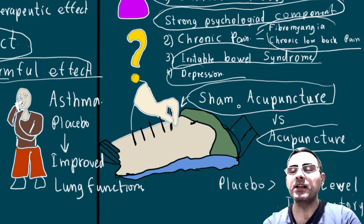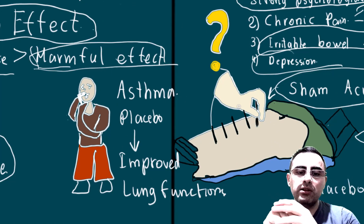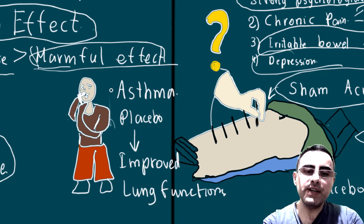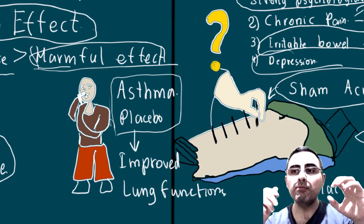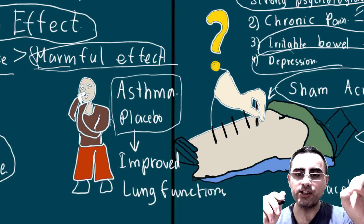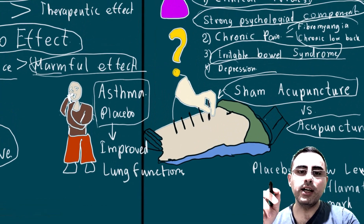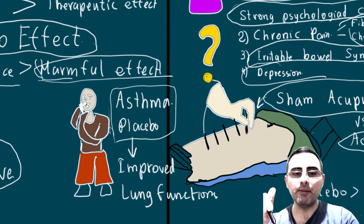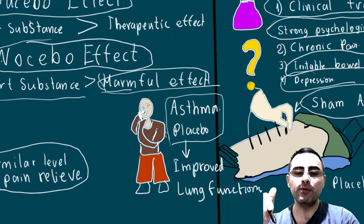Another example where placebo is similarly effective to conventional treatment is asthma. When patients had an asthma attack, they were given either conventional inhalers or placebo. Both groups had improved symptoms and improved lung function, which was objectively measured. So in the case of asthma, placebo objectively improved not only physical symptoms but also lung function — sometimes placebo can have a similar effect to conventional treatment.